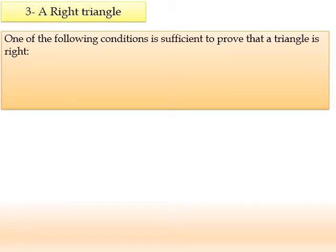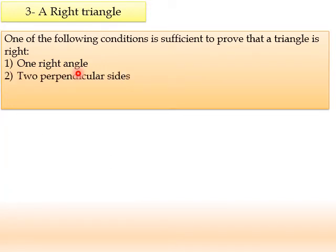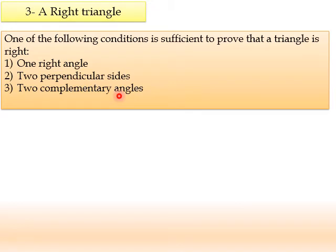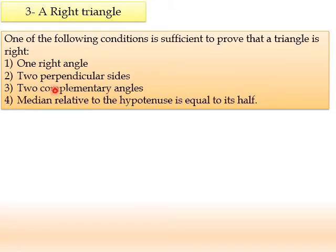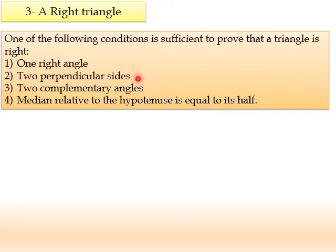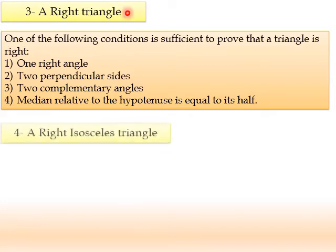A right triangle has one right angle, and the side facing the right angle is called the hypotenuse. So if we have a given right angle and two perpendicular sides, or two complementary angles — meaning the sum of the angles is 90 degrees — or the median relative to the hypotenuse is equal to its half (the median issued from the vertex of the right angle to the midpoint of the hypotenuse equals half the hypotenuse), then any one of these conditions tells us that the triangle is right.